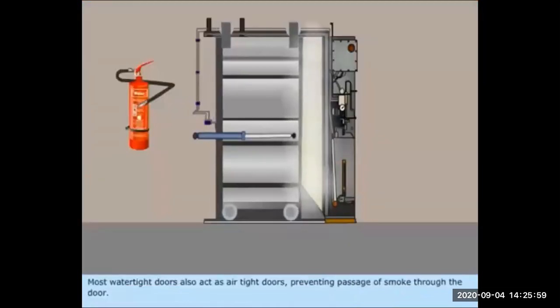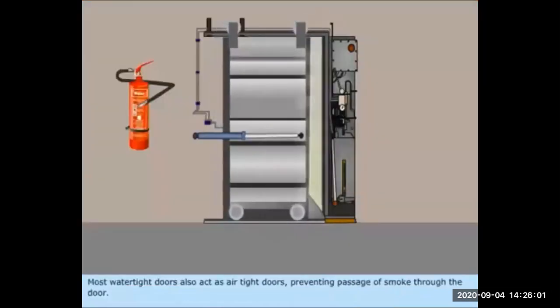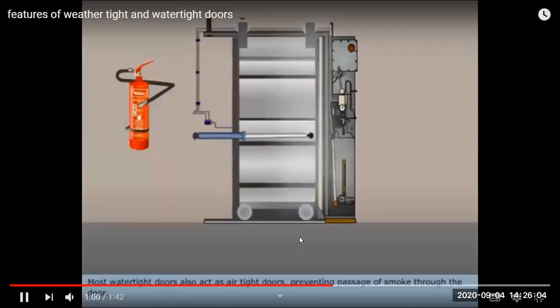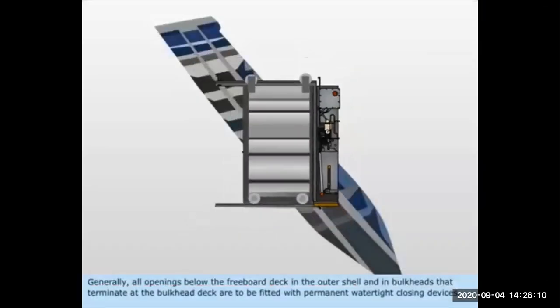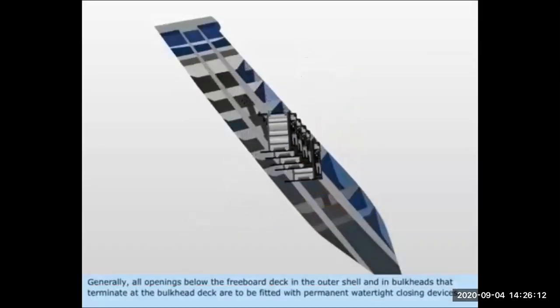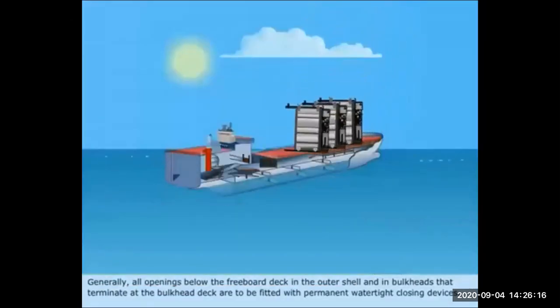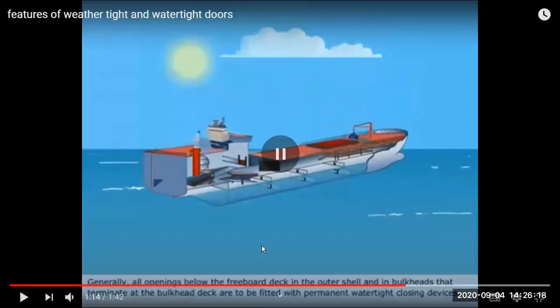These are the water tight doors which are fitted on passenger ships and other ships which have openings under the compartments of different compartments below the water line. Passenger ship's accommodation is below the water line also, so they have to go for access from one another, but in case of flooding, they should have water tight doors to prevent flooding from one compartment to another.